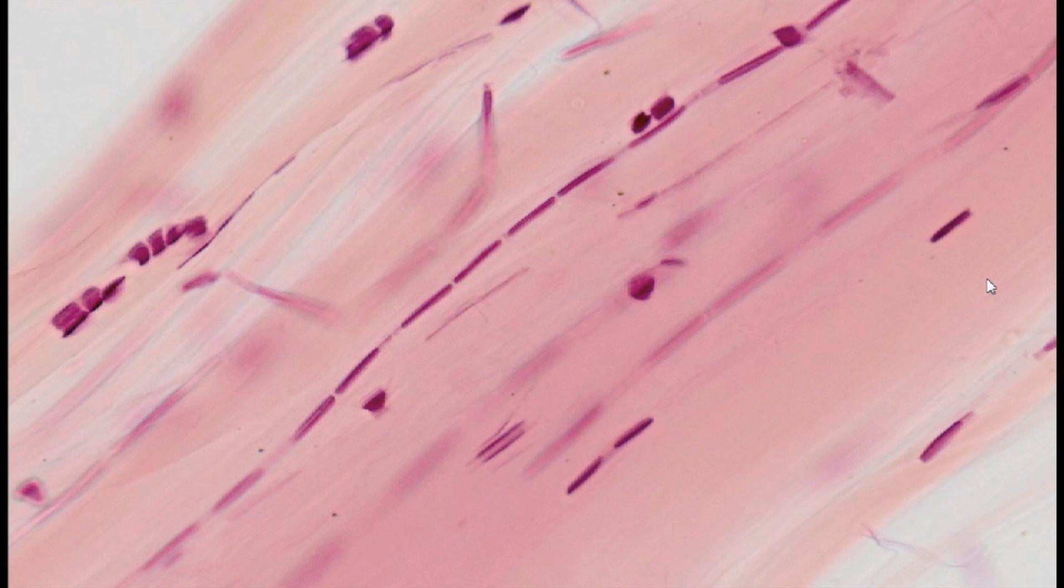Between the bundles are hematoxylin-stained nuclei of fibrocytes, the dormant form of fibroblasts. These cells differ from their precursors by reduced cytoplasm, loss of basophilic character, and a small nucleus indicating limited DNA transcription.